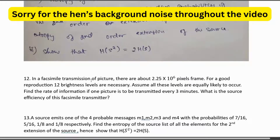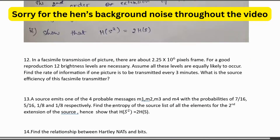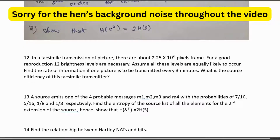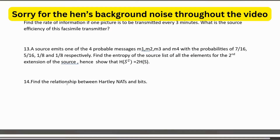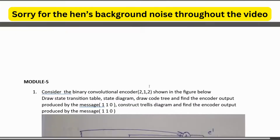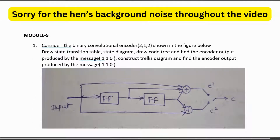For information rate problems: in facsimile transmission of pictures there are about 2.25×10^6 pixels per frame; for good reproduction 12 brightness levels are necessary — assume all levels are equally likely. Find the rate of information and source efficiency. Also, a source emitting one of four messages m1, m2, m3, m4 with given probabilities — find entropy and prove H(S²) = 2·H(S). The relationship between Hartleys and bits is also very important.